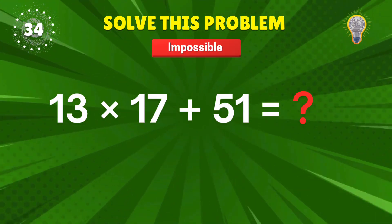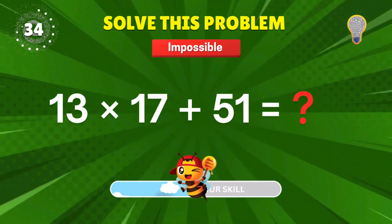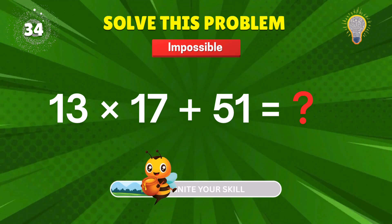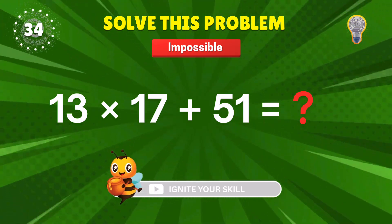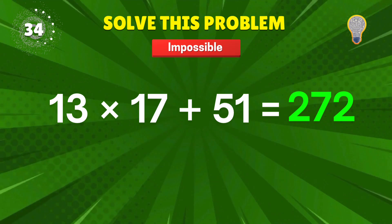13 times 17? Plus 51? Tricky but tasty. 272. Chef's kiss. Plus 1 to your score.